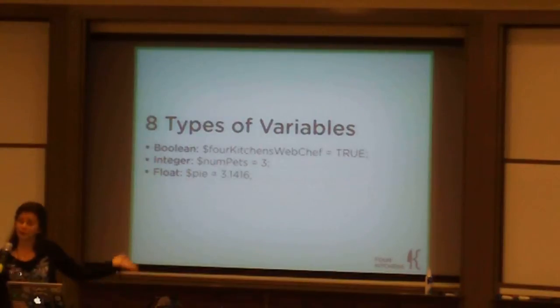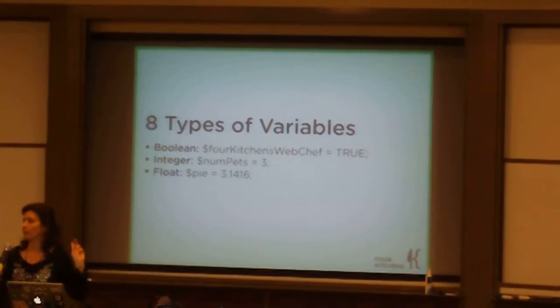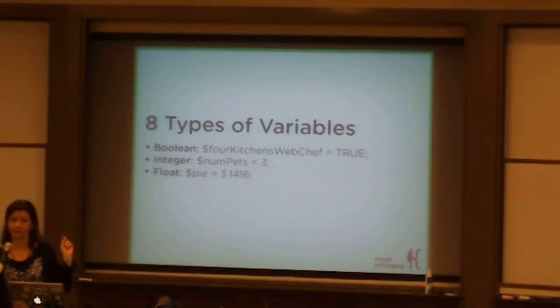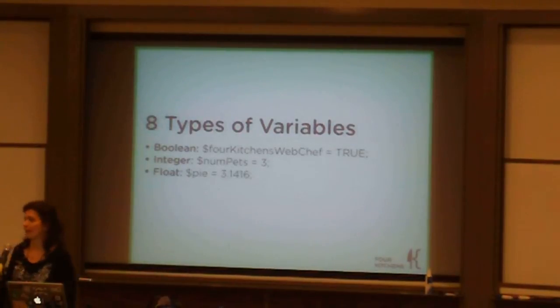Variables can also be a float, meaning you can use decimal points in your numbers. In programming language, that is called a float.